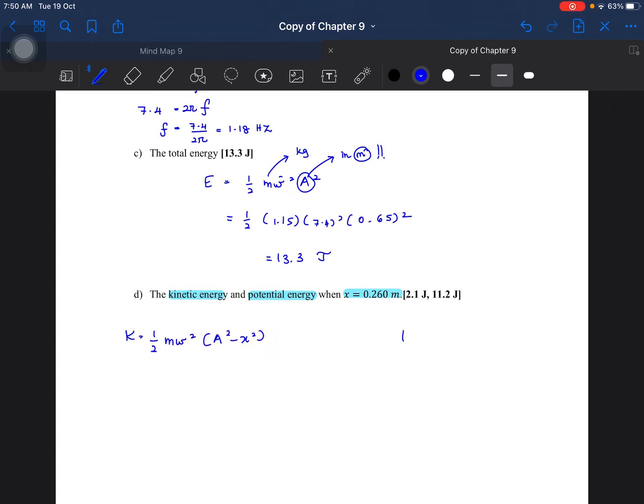Yang formula U tadi adalah 1 over 2 m omega square X square. So mass is 1.15, omega is 7.4 square, A is 0.65 square, tolak X kita tadi adalah 0.260 square.